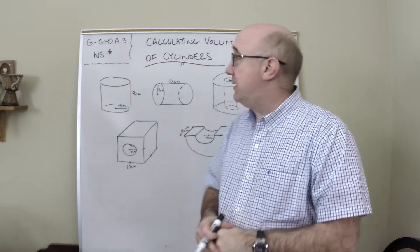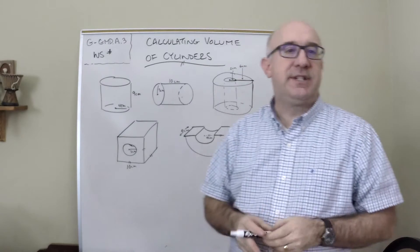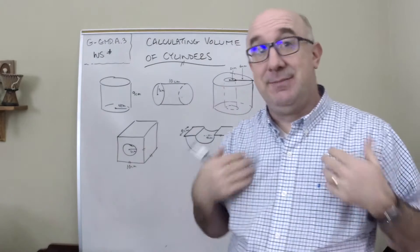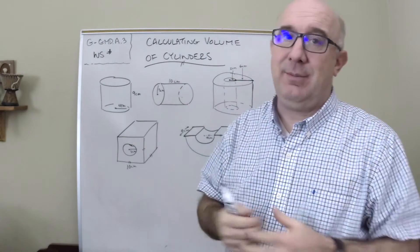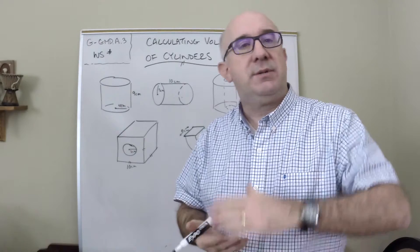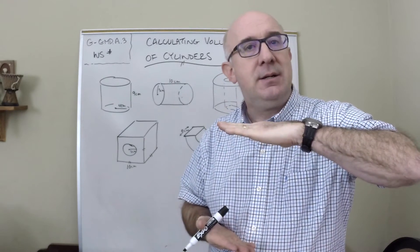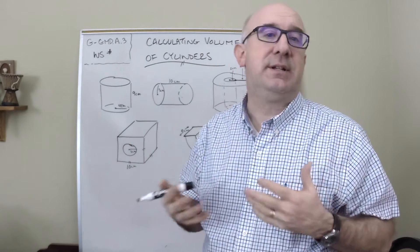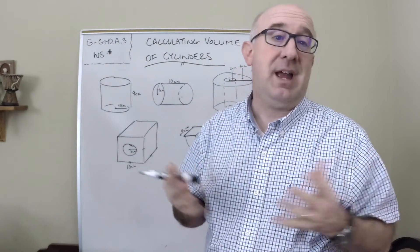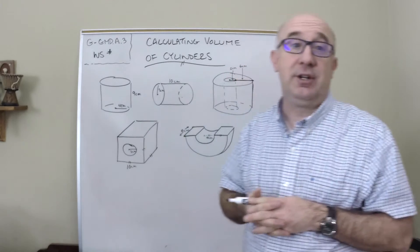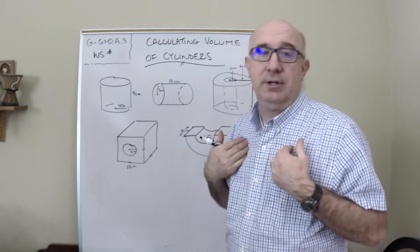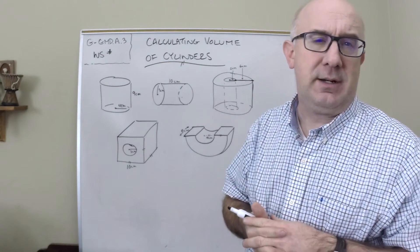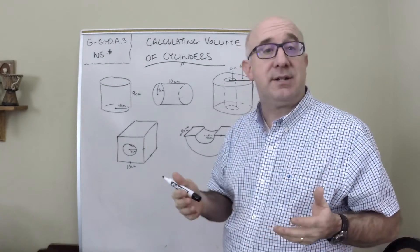Let's take a look at volume of cylinders. Cylinders and prisms are basically the same concept. Prisms have two identical bases, and so do cylinders. The base here to be a cylinder has to have a curve on it, usually circular, and everything we're going to do is going to be a circle.